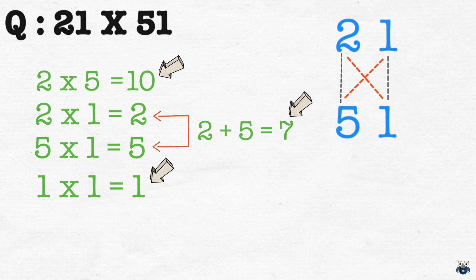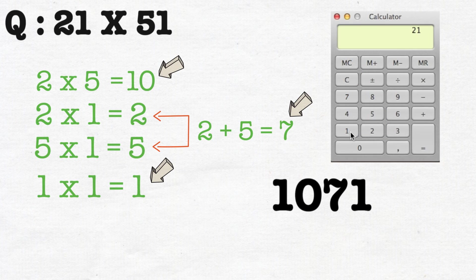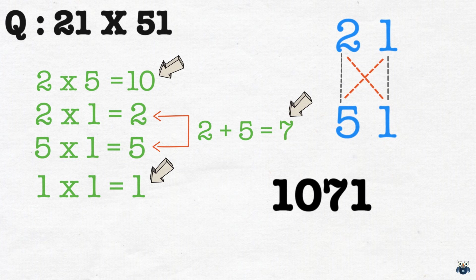1 into 1 is 1. And joining our numbers, we get 1071 which is our final answer. But is this correct? Let's quickly find out. Great!